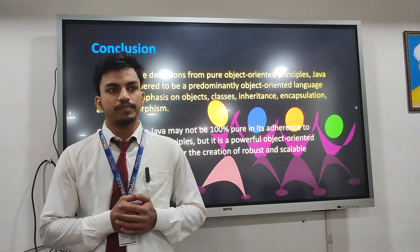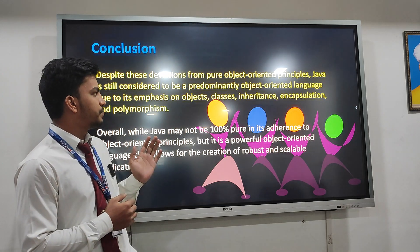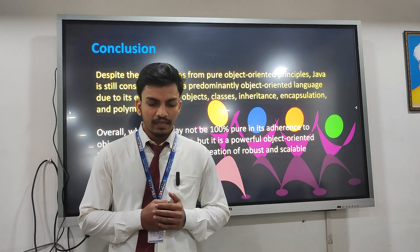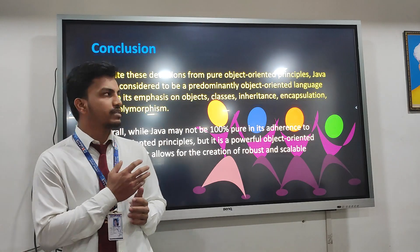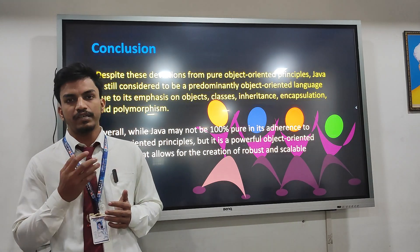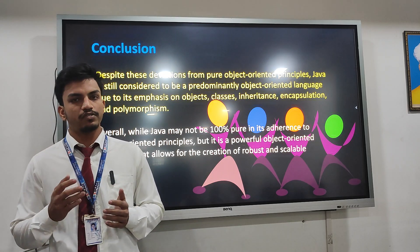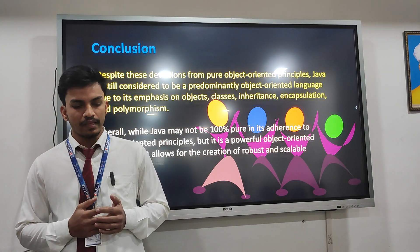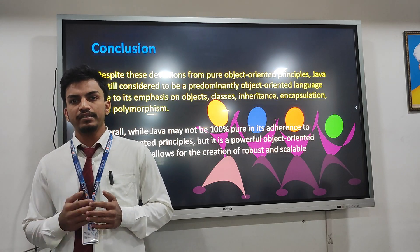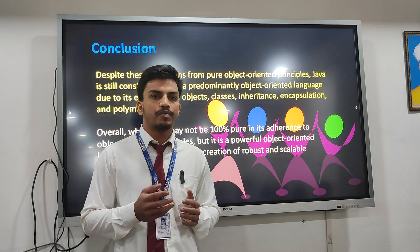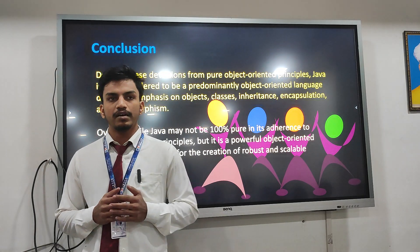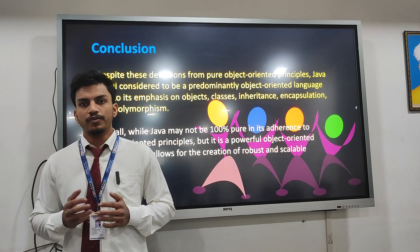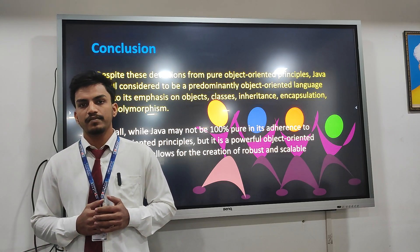Moving to the conclusion — from the previous slides, we understand why Java is not called a pure object-oriented programming language. Despite this deviation, Java is a powerful object-oriented programming language that follows the concepts of classes, objects, inheritance, encapsulation, and abstraction. Overall, in my opinion, even not being 100% pure object-oriented, Java is a powerful object-oriented programming language used by most organizations around the world for creating robust and powerful applications. Thank you.